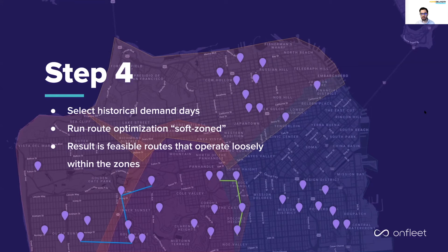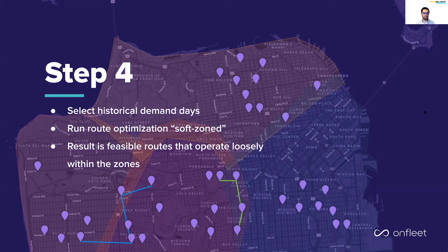This is not the same data set that we used to create these zones — this is going to be actual days. Pick historical days that are representative of your high volume days and your low volume days. For example, if Friday is typically your highest volume, make sure you create routes for a few of your historic Fridays; if Tuesday is your lowest volume, run routes for a few historical Tuesdays. Make sure in your routing constraints that you're using a soft zoned approach — so in addition to the overlap we see here, these routes will actually flex beyond the boundaries even more. If your route optimization engine does not allow for a soft zoned approach, then it's time you get a new route optimization engine.